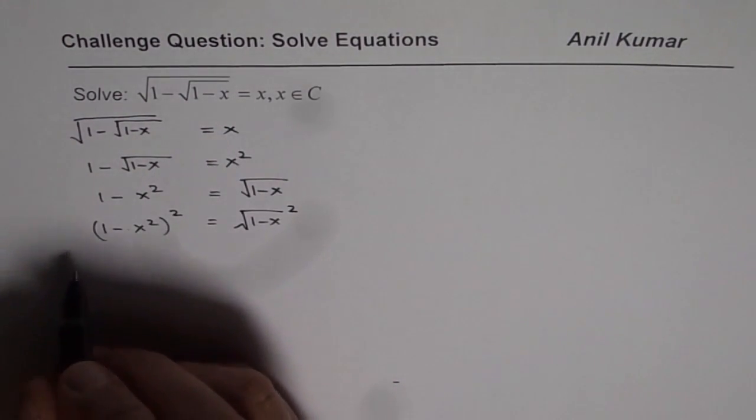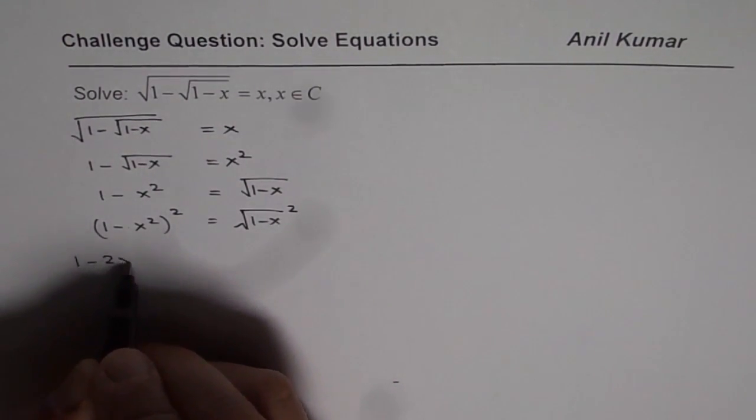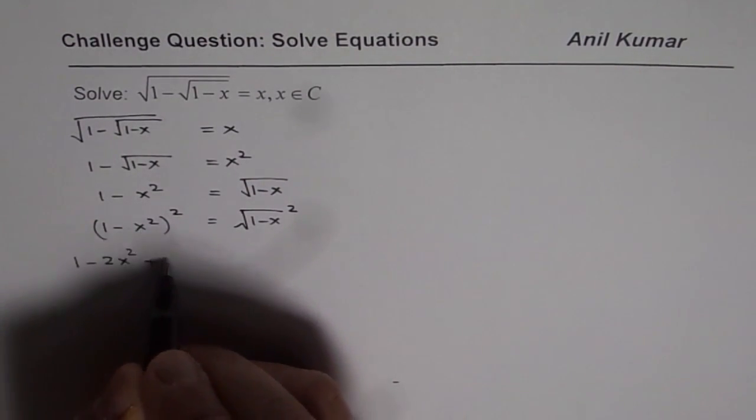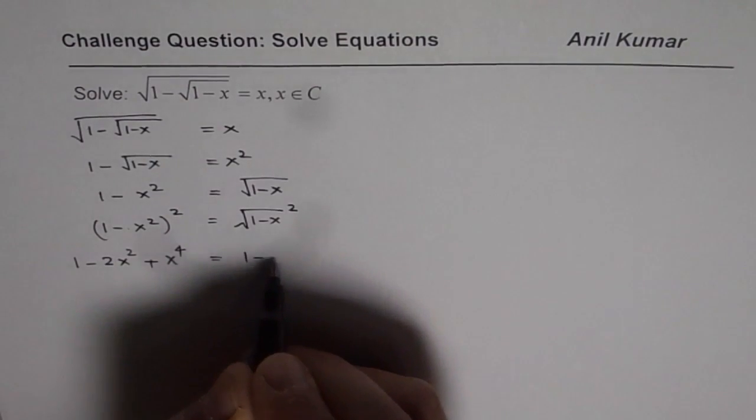So let me expand this. 1 minus 2x square plus x square whole square which is x to the power of 4 equals 1 minus x.